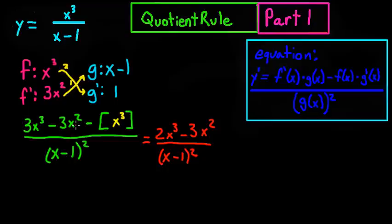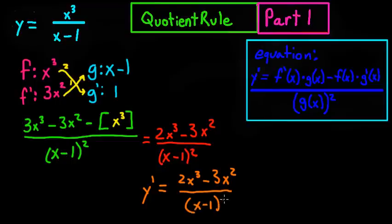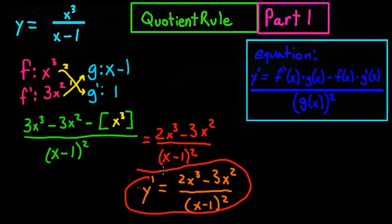And if you're taking a test, the way that you would finally want to write that would be derivative of y, remember to use that little notation, equals 2x cubed minus 3x squared all over x minus 1 squared. And that is your final answer.